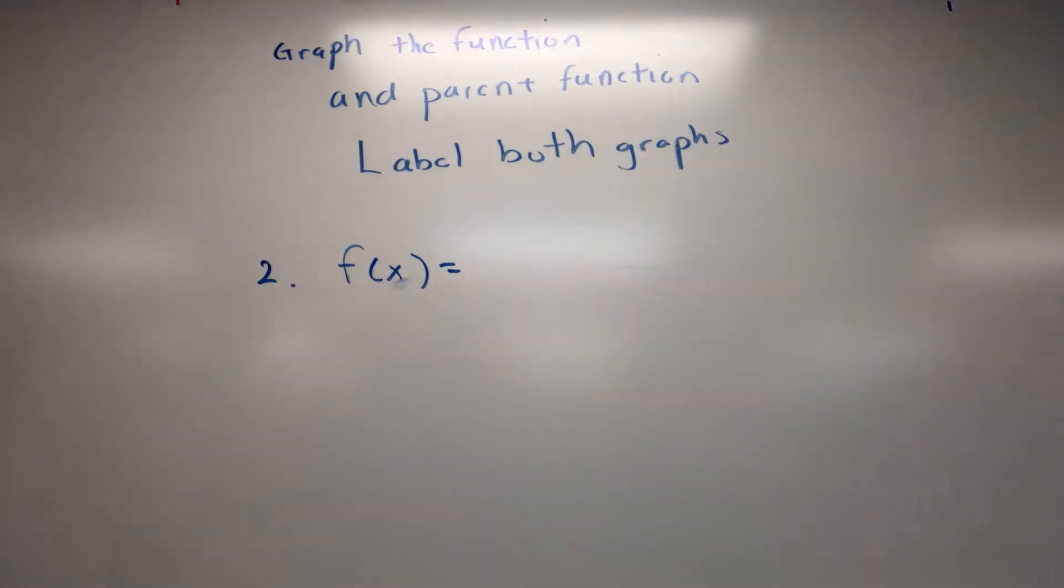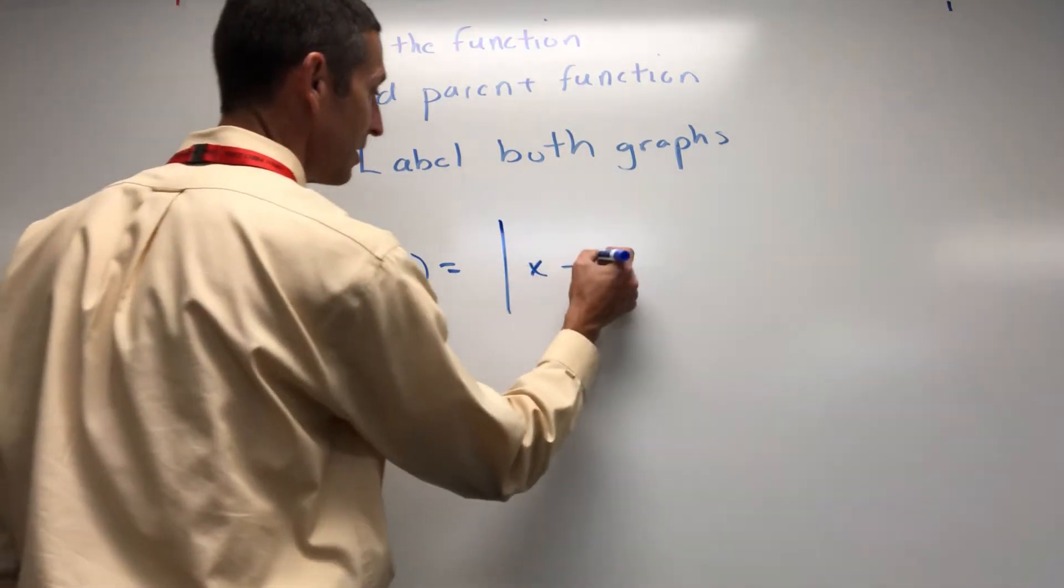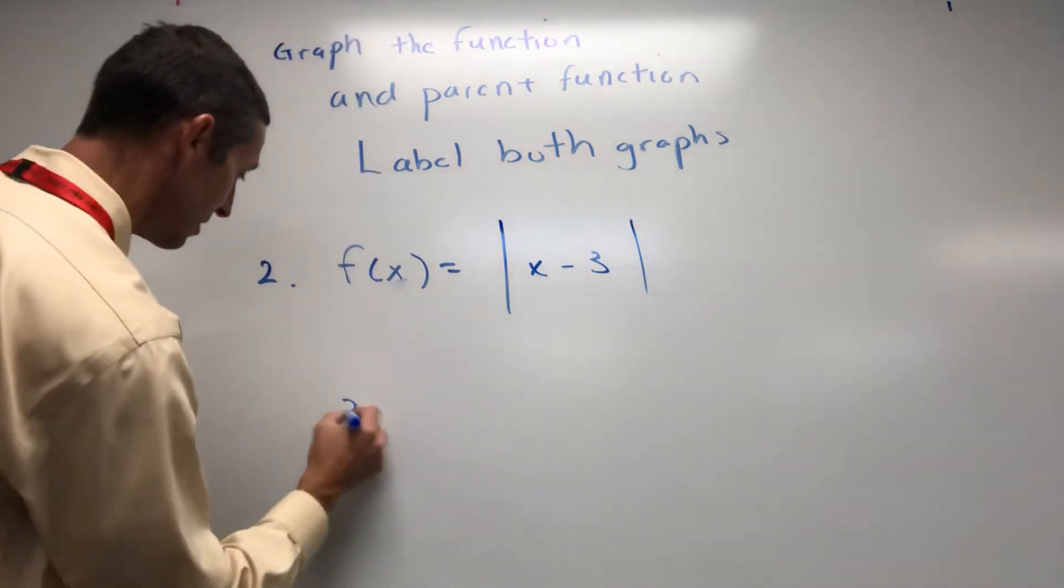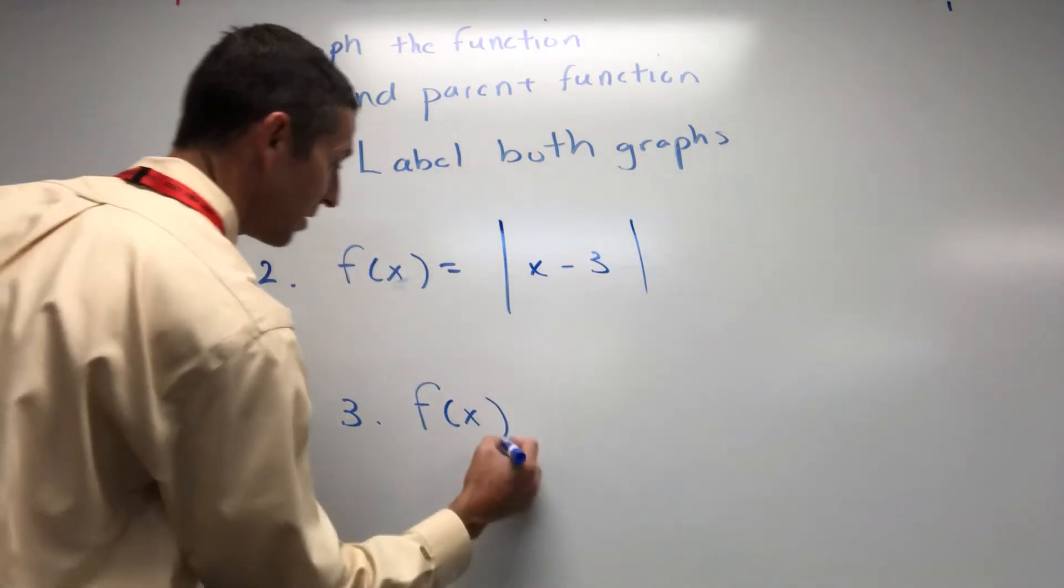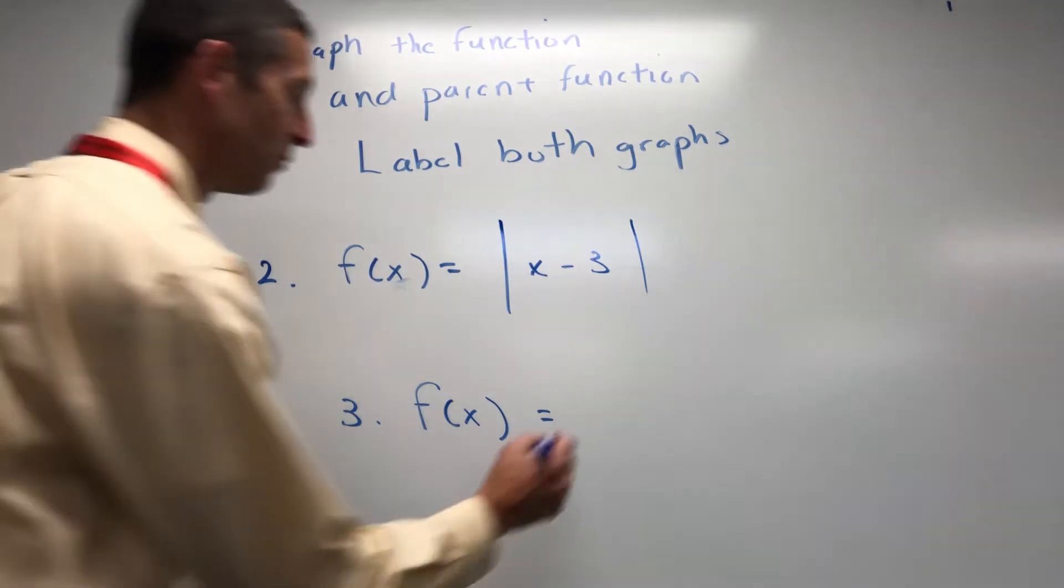So let's get a function up there for you. Let's go some absolute value, x minus 3. And what do we got next? x squared plus 4.